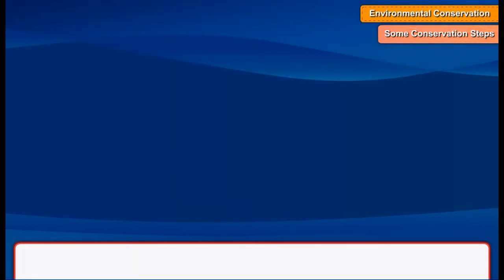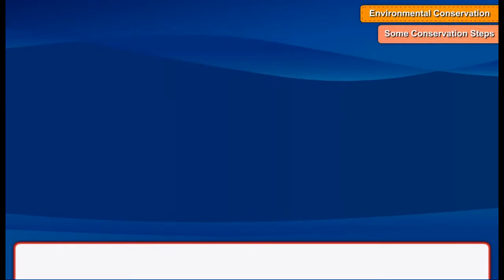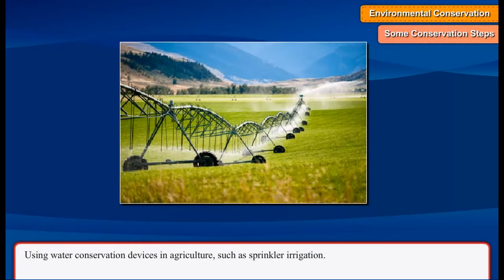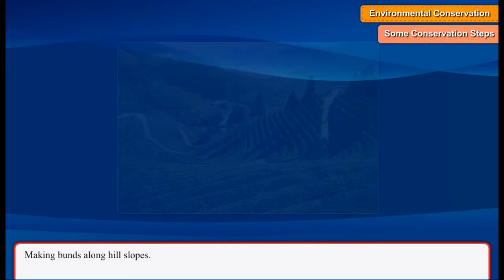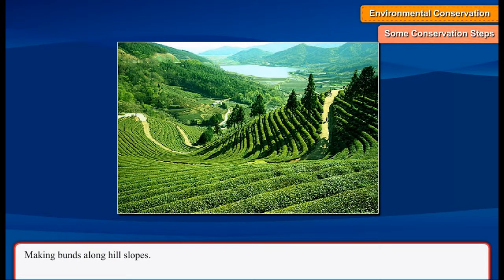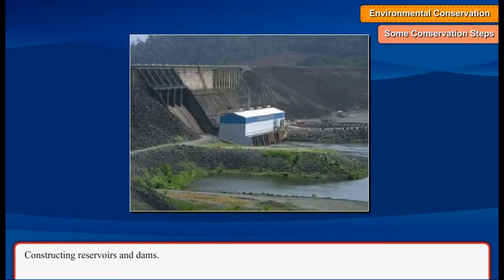Further conservation steps include harvesting of rainwater, using water conservation devices in agriculture such as sprinkler irrigation, making bunds along hill slopes, and constructing reservoirs and dams.